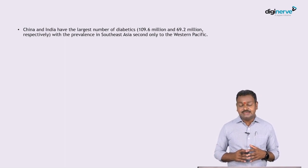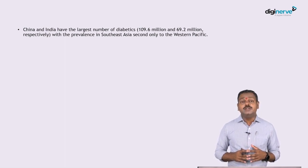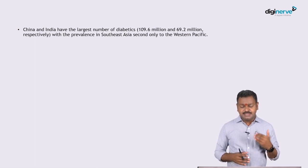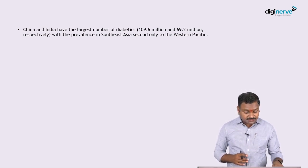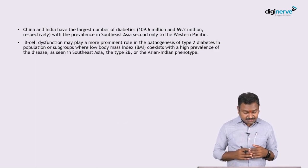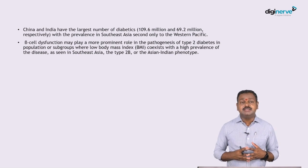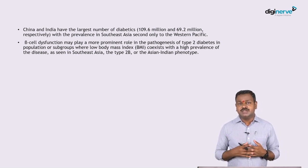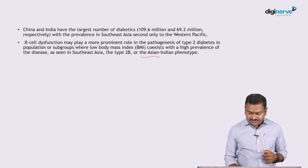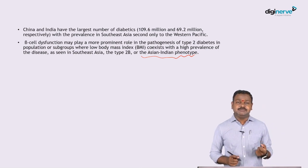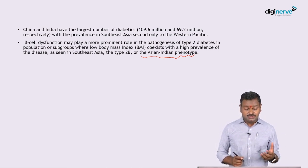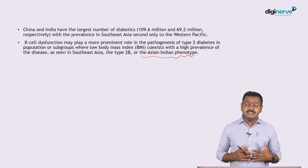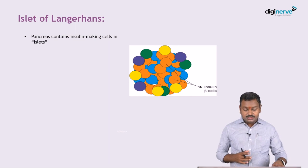India and China have the largest diabetic populations — India has 109 million and there are 69.2 million in India, with the prevalence of Southeast Asia second only to the Western Pacific. Eventually India may become the diabetes capital of the world. Beta cell dysfunction may play an important role in the pathogenesis of type 2 diabetes especially at low BMI — this is the Asian Indian phenotype, where you have a thin or lean diabetic but with insulin resistance.